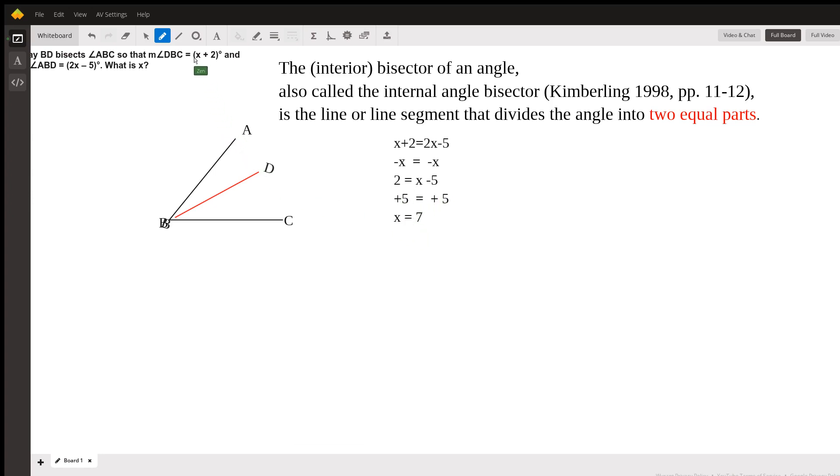Go ahead and check it. 7 plus 2 is 9 degrees. 2x, if x equals 7, 2 times 7 is 14 minus 5 is 9 degrees. So that is true.